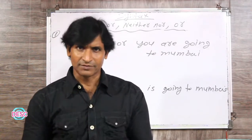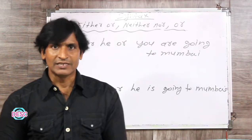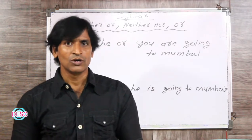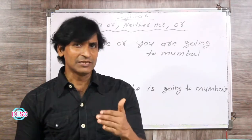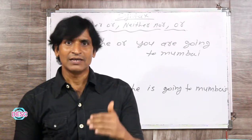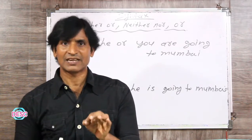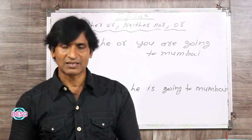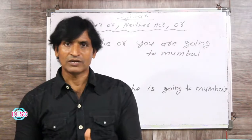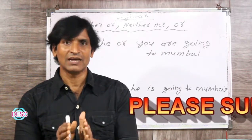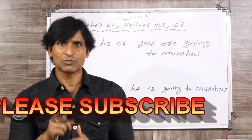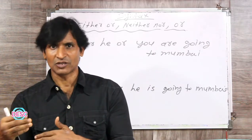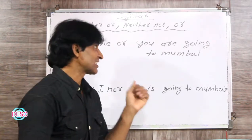अभी हम दूसरा नियम समझते हैं: यदि अलग-अलग person — first person, second person, और third person — either or, neither nor, या or से जुड़े हों, तो उसमें जो sentence का आखरी person होगा — चाहे first person हो, second person हो, या third person — उसके हिसाब से हम verb या pronouns का इस्तमाल करते हैं. और sentence में person का क्रम 2-3-1 होता है — यानि sentence में हमेशा second person पहले आएगा, फिर third person, फिर first person.